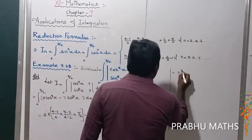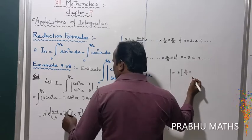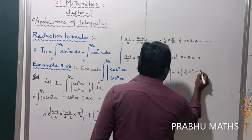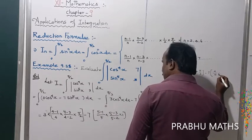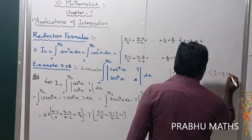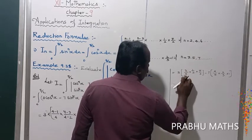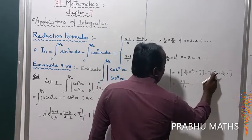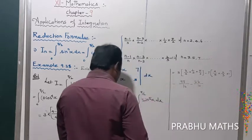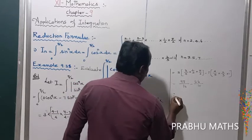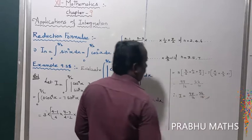So I equals 3 times (3/4) times (1/2) into (5/2) minus 7 times (4/5) times (2/3) times 1. The numerator: 3 × 3 = 9, and 9 × 5 = 45, over 16 for the first part. Then 7 × 4 = 28, and 28 × 2 = 56, over 15 for the second part. Therefore, I equals 45/16 minus 56/15.